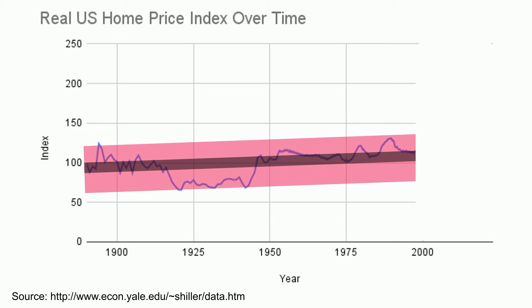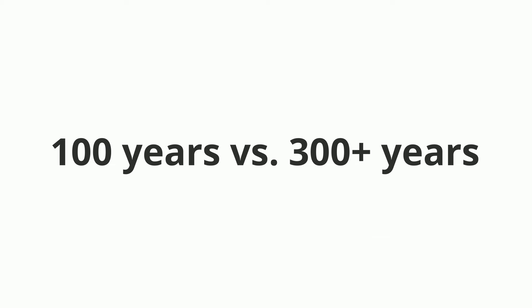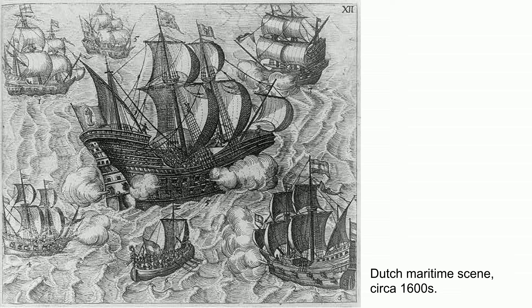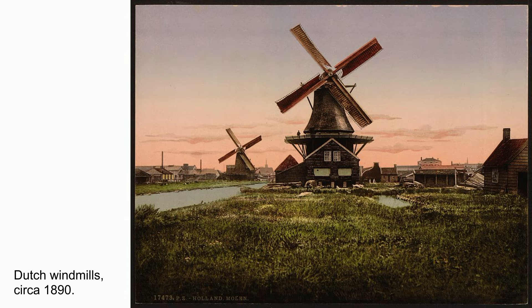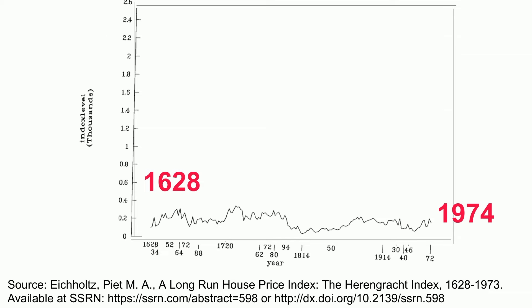This tight variance will be useful to recall later in this video. But this data is just for the U.S. Maybe other countries are different, and maybe 100 years is not long enough to establish a pattern. What about several hundred years of pricing data? This next chart shows housing price data for Amsterdam over four centuries. The price appreciation in real inflation-adjusted terms between 1628 and 1974 was 0.45%.